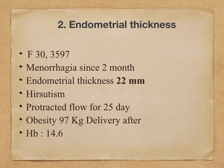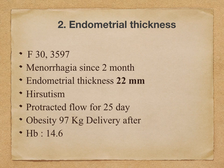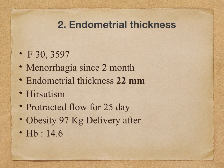Another case of endometrial thickness — a female aged 30 with menorrhagia since the last two months. The endometrial thickness is 22 mm; the normal thickness is 8 mm. In this case, the 22 mm resulted in menorrhagia with continuous flow of menses since last two months. Along with that, the patient has hyperthyroidism and a protracted flow of nearly 25 days of menses every month. The patient is also obese at 97 kg, obesity developed after delivery, and the hemoglobin is 14.6 grams.